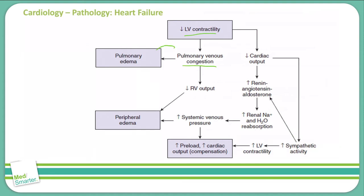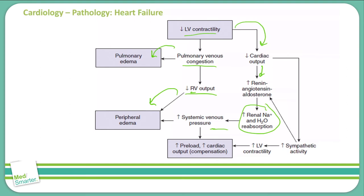That can in turn lead to pulmonary edema. That backup into the lungs can then continue and backup into the right side of the heart, decreasing our right ventricular output and leading to peripheral edema. Our decrease in contractility will also decrease cardiac output, which activates the renin-angiotensin-aldosterone system, causing an increase in renal sodium and water reabsorption because the body thinks there's not enough fluid. This increases systemic venous pressure, pushing us toward more peripheral edema and increasing the preload on the heart.